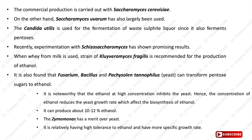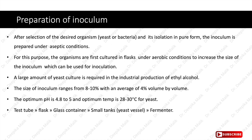The next step is preparation of inoculum. After selection and isolation of the desired organism in pure form, the inoculum is prepared under aseptic conditions. Organisms are first cultured in flasks under aerobic conditions to increase the inoculum size. The inoculum size ranges from 8 to 10% with an average of 4% volume by volume. Optimum pH is 4.8 to 5 and optimum temperature is 28 to 30 degrees Celsius for yeast. The inoculum is prepared in sequence: from test tube to flasks, to glass containers, to small tanks or yeast vessels, and finally into the fermenter.